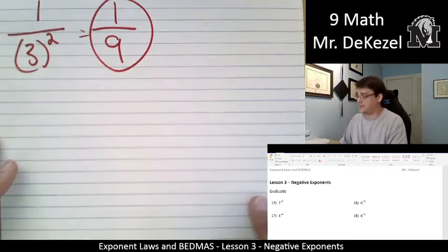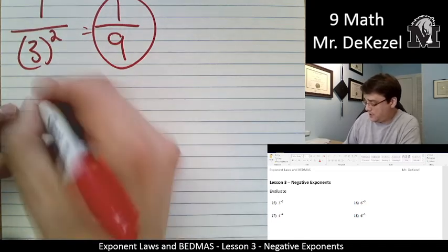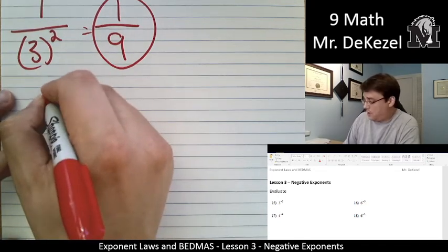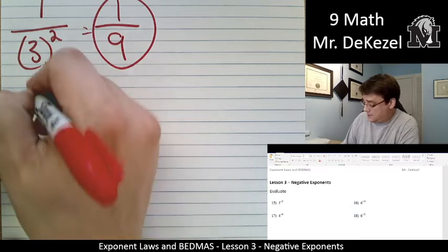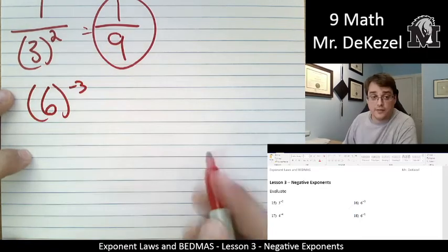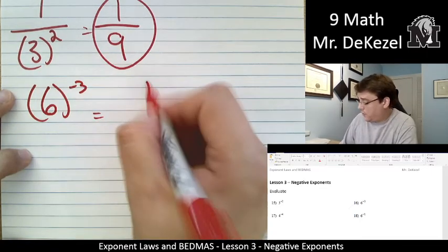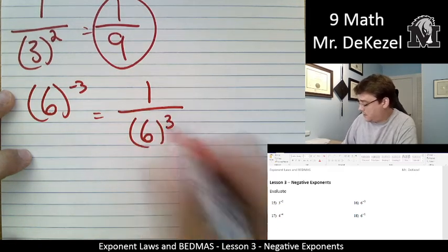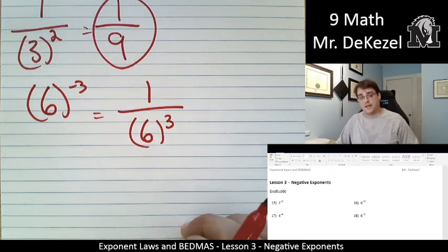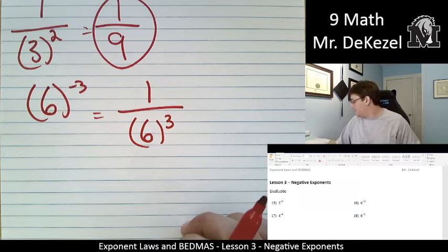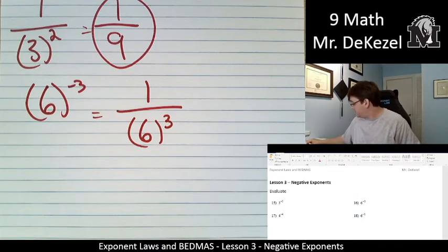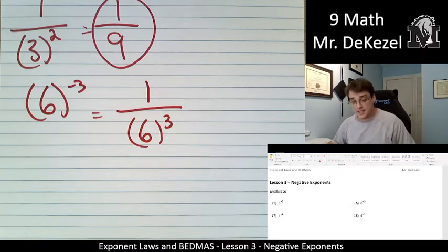Let's do the one to the right here. This is 6 to the power of negative 3, so that ends up being 1 over 6 to the power of 3. In our last lesson, we did 6 to the power of 3.